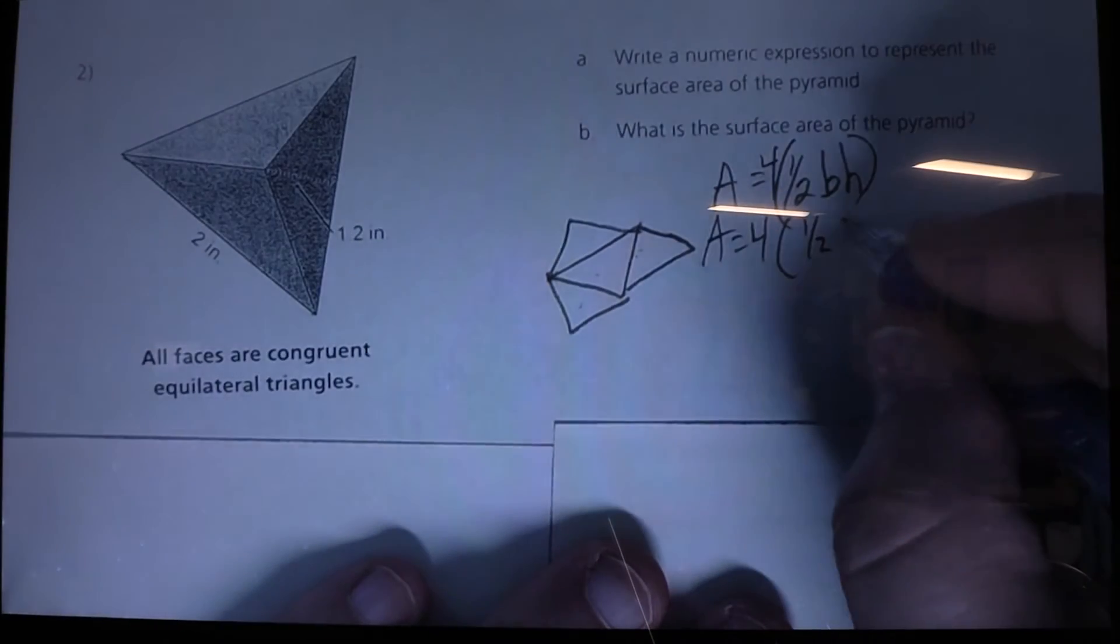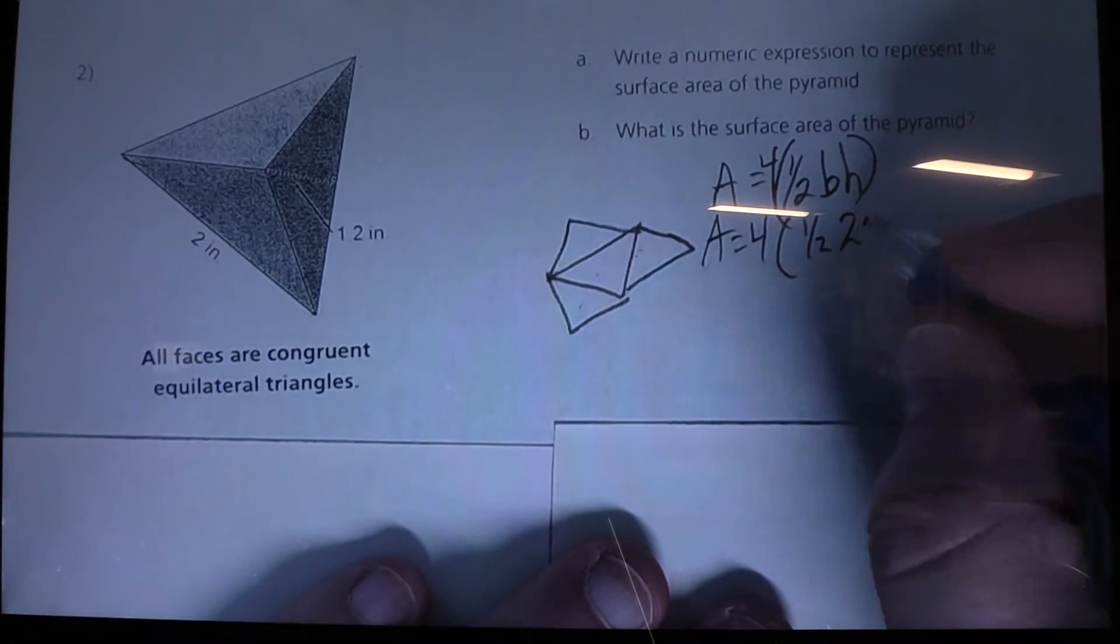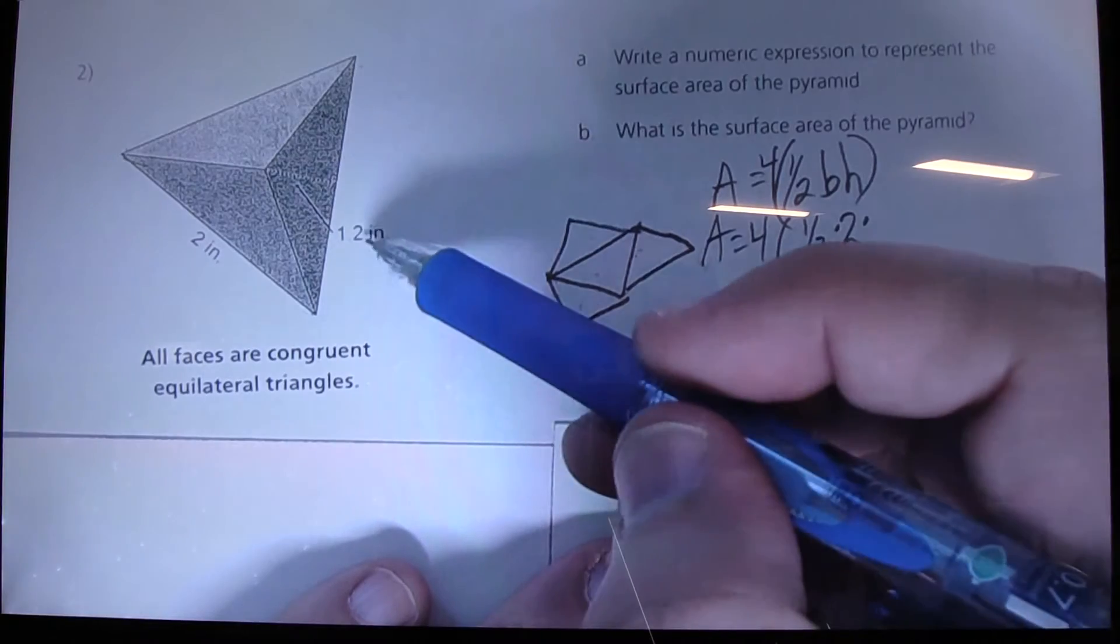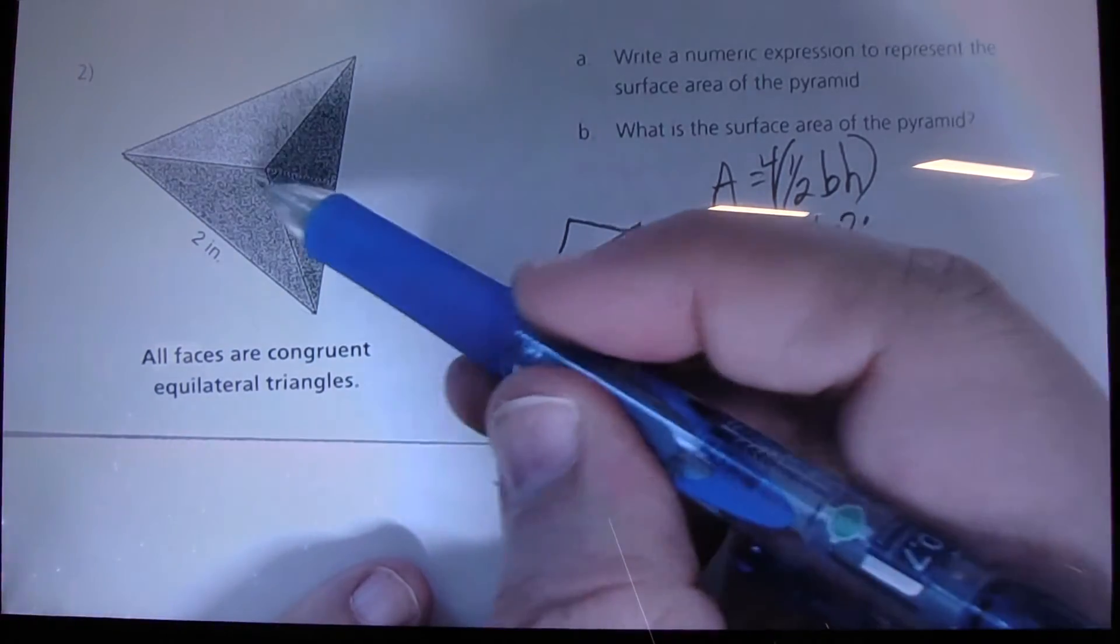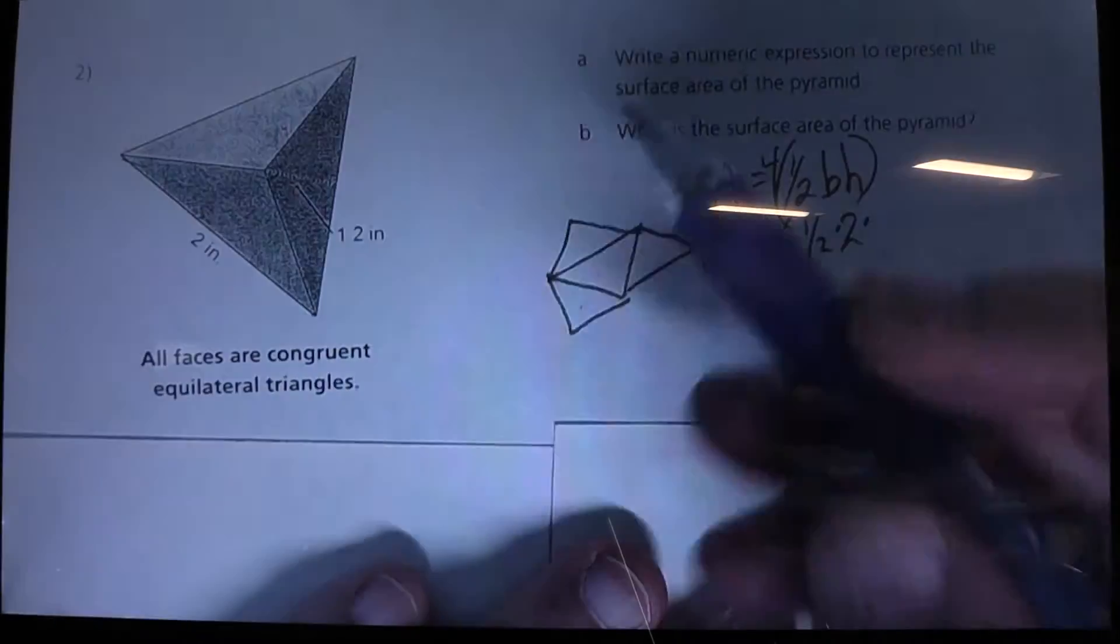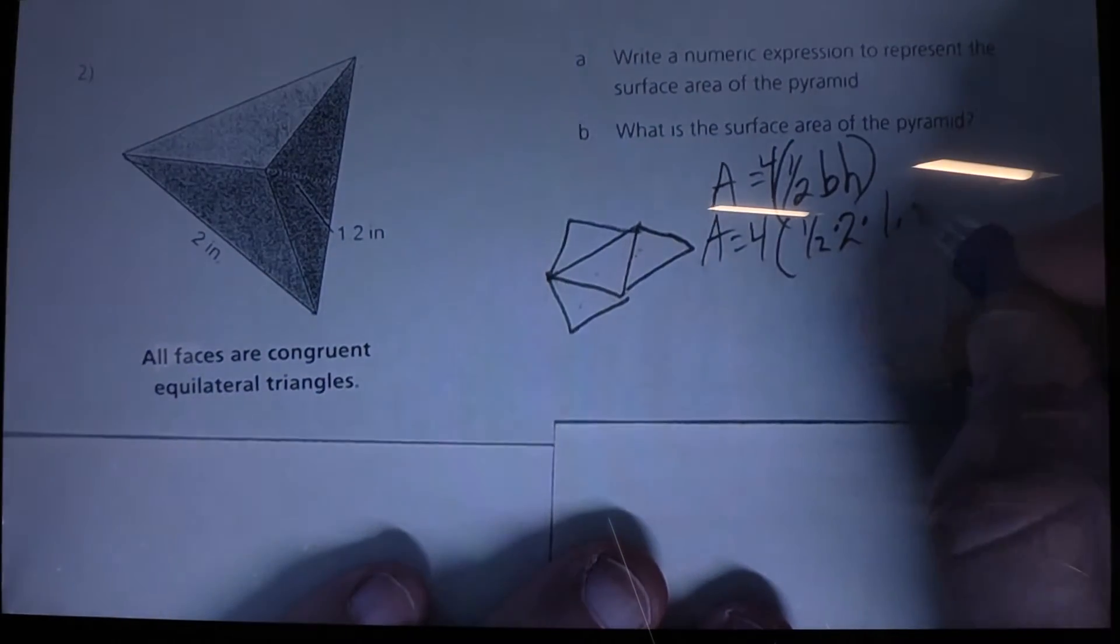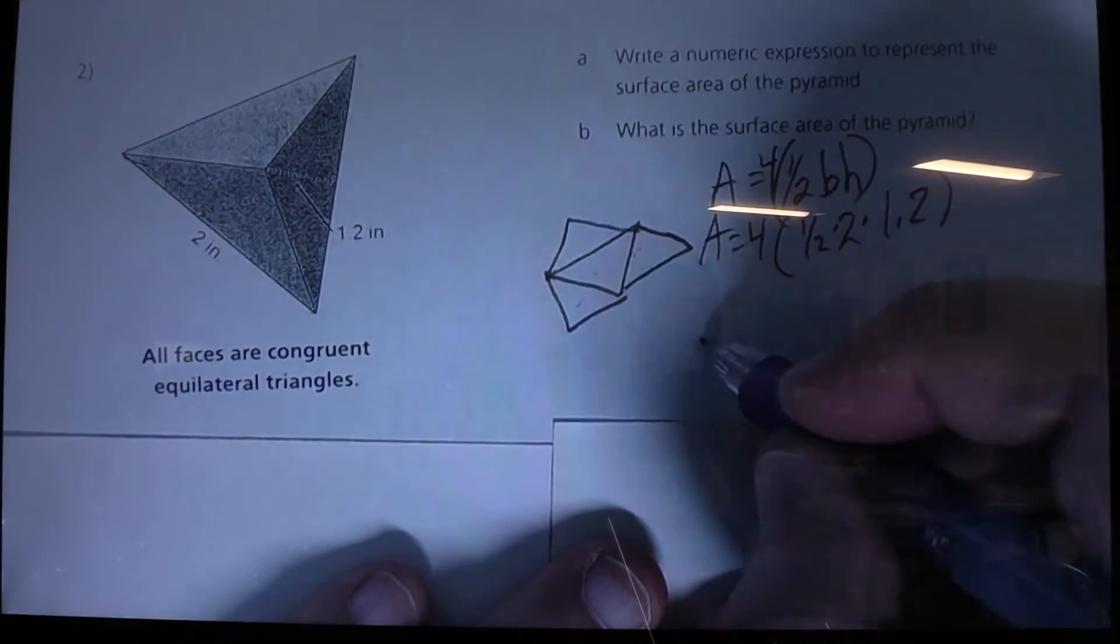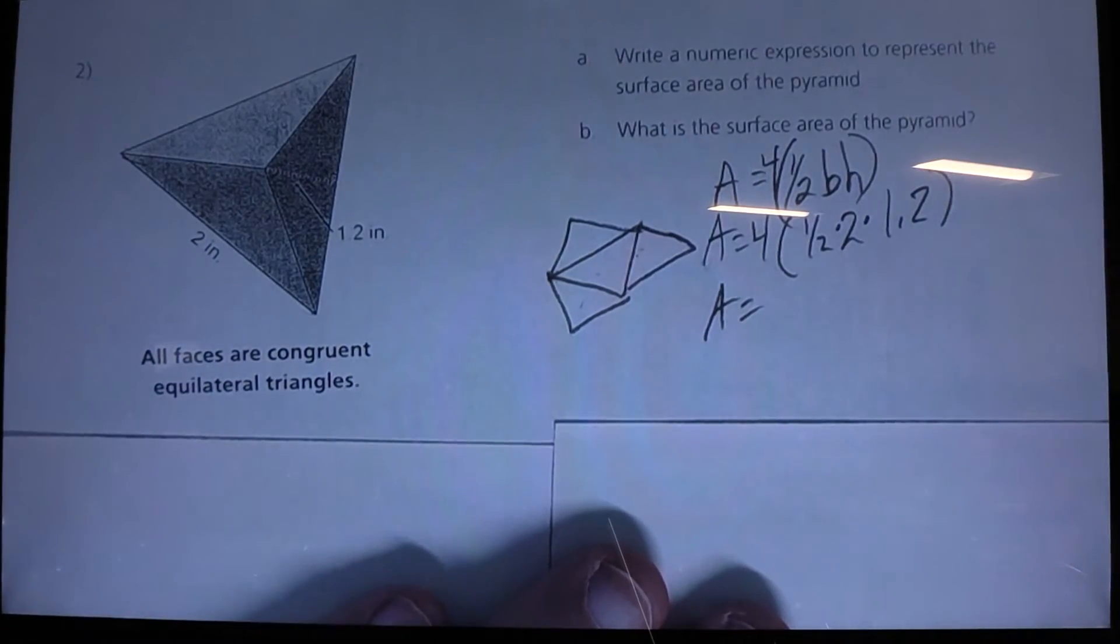So I can say then just 2 inches. Now, the height is 1.2 inches. And since they're all equilateral, the height of 1 is going to be the height of all of them. So, 1.2 inches. So now, I just have to go through and work it out step by step.